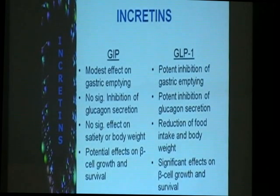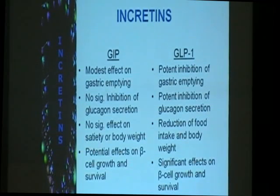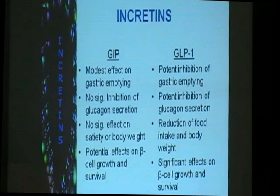What are the differences between the two? GLP-1 has potent inhibition of gastric emptying, so there can be an effect on delaying the rise in blood sugar. It also inhibits glucagon secretion and therefore may cause loss of body weight. The other one, GIP, has only a modest effect on gastric emptying. It does not inhibit glucagon, and it has no effect on satiety or body weight.